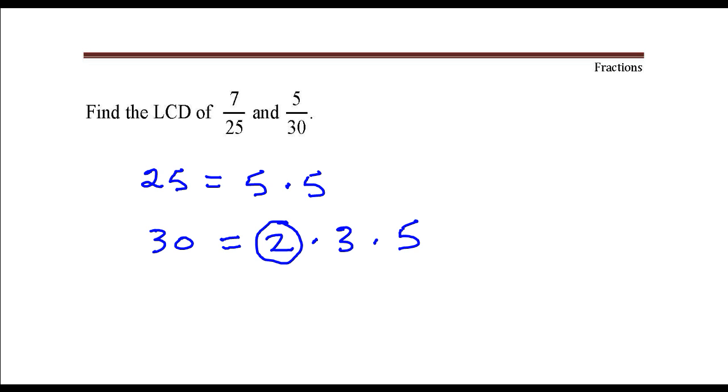The greatest number of times that a 3 occurs is just once also. The greatest number of times that a 5 occurs is right here, it occurs twice.